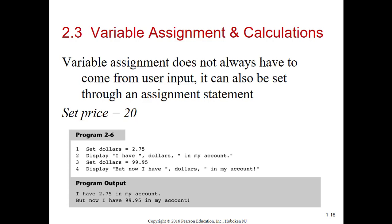On this example, they're taking a variable, setting the price to 20. They've got to declare a variable and then give it the initial value 20. A variable assignment does not always have to come from the user input. It can be set through an assignment statement. They're setting price to 20 because that's the assignment statement. It's taking the 20 what's on the right of the equal sign, storing in a variable price. In program 2.6, they're setting dollars to 2.75 and then outputting that out. Then they're setting dollars to 99.95 and outputting that out. That works fine, but the problem is that's all that's going to ever show in this program. The better way would be let the user enter in the dollars. That way you can use the program multiple times.